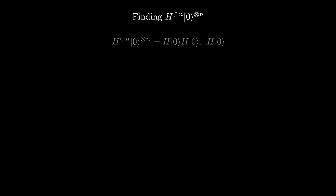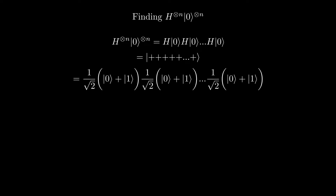Applying Hadamards to n zero qubits gives us n plus states. If we expand them out, we get (1/√2)(|0⟩ + |1⟩) tensored with (1/√2)(|0⟩ + |1⟩), and so on, n times.